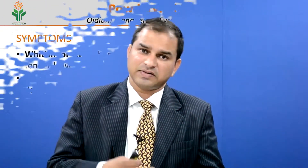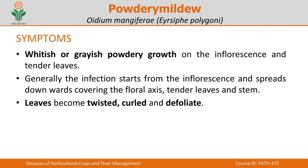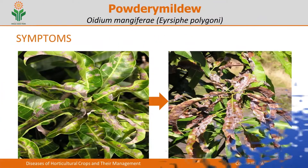Since powdery mildew is an airborne disease, the first infection starts at the top and gradually moves towards the basal portion. It covers the floral axis, tender leaves, and stem — all aerial parts will be affected. The leaves become twisted, curved, and sometimes defoliated. On the screen you can really see the infected leaves with white powdery coating on their surface.